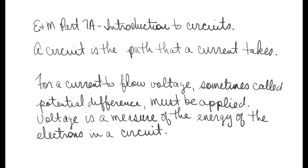Now because electrons are matter, they require energy. So for current to flow, voltage, sometimes called potential difference, must be applied. Voltage is nothing more than a measure of the energy of the electrons in a circuit. The higher the voltage, the more energy they have.